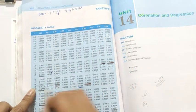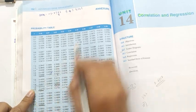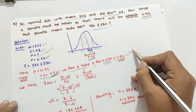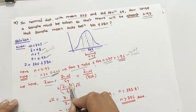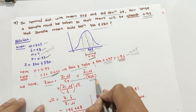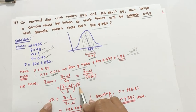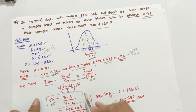Using the formula z equals x-bar minus mu upon sigma-x, where sigma-x equals sigma upon square root of n. Rearranging to find n: square root of n equals z into sigma divided by x-bar minus mu.